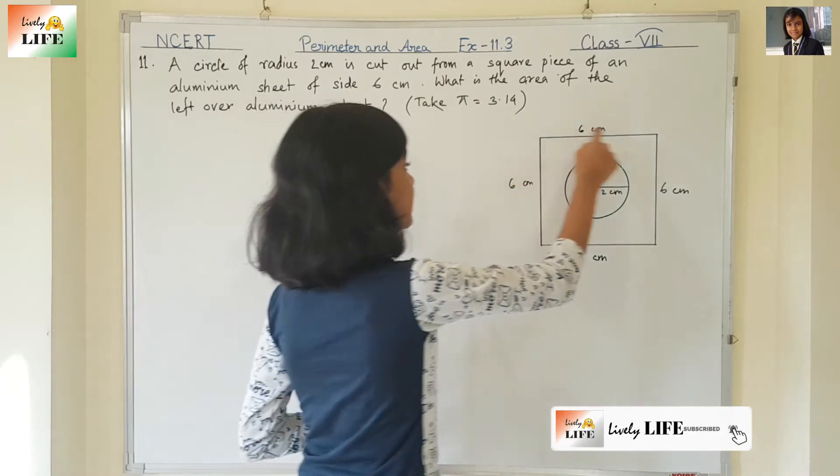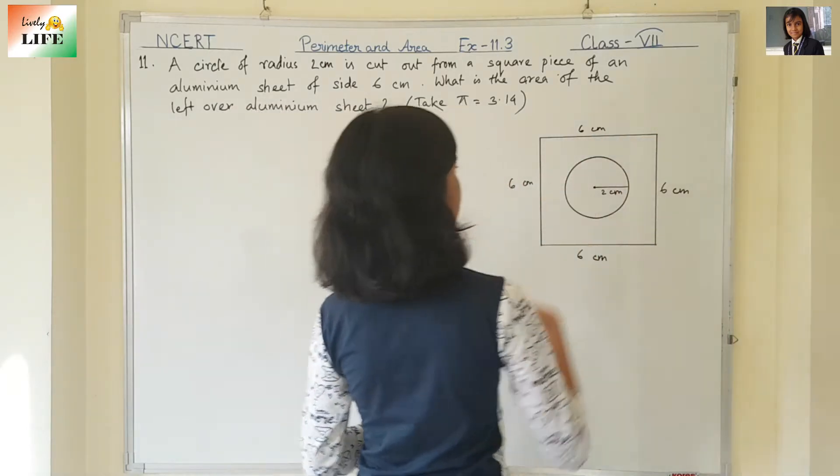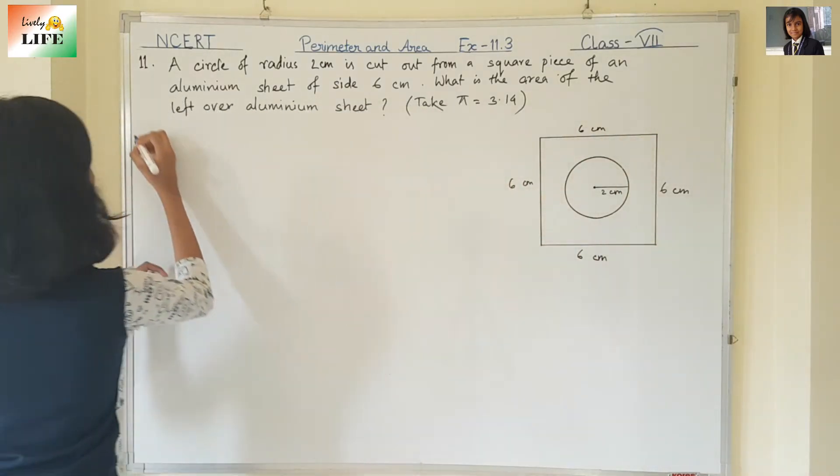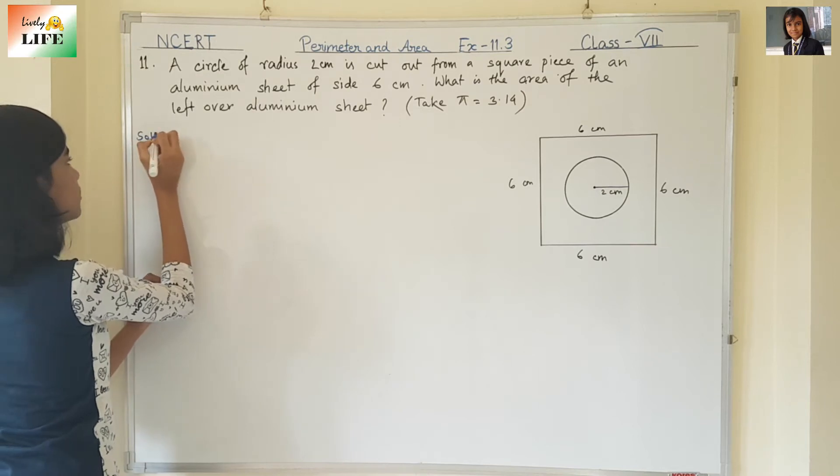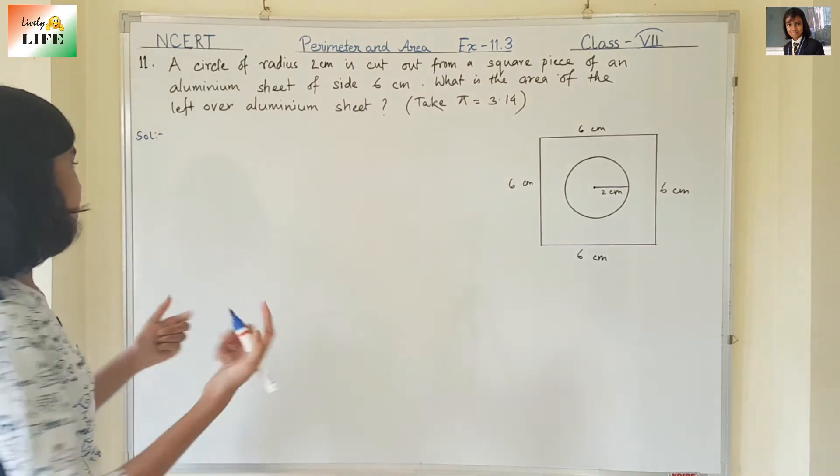So for this, we need to find out the area of the square and the area of the circle. So first, let's find out the area of the square.